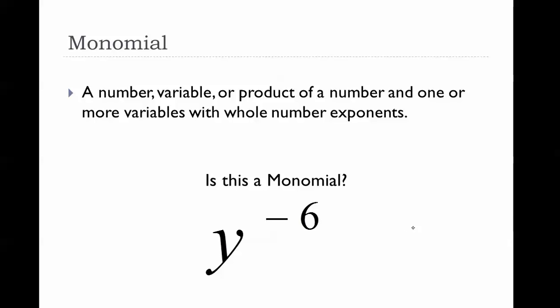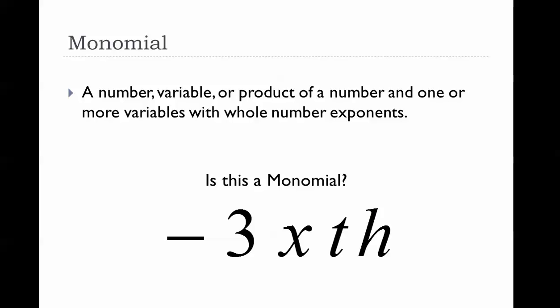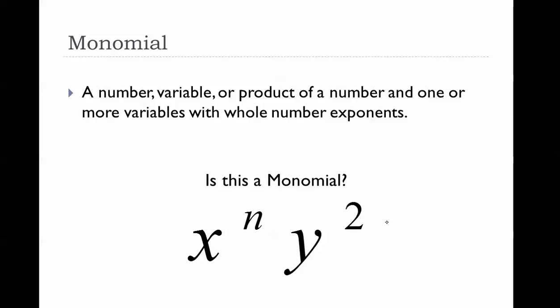How about this one? Yes, this is a monomial. You might say there's a negative three — but that negative three is not an exponent, it is a number, a constant. So this can be a monomial because the negative three is a coefficient, and then the variables are all being multiplied. Therefore, yes, it is a monomial.